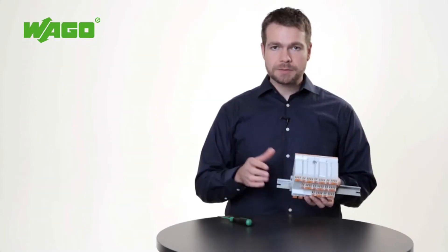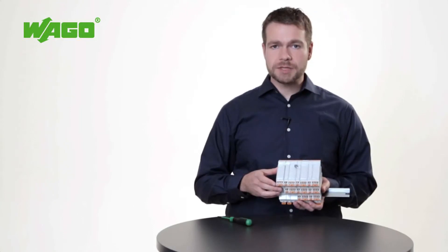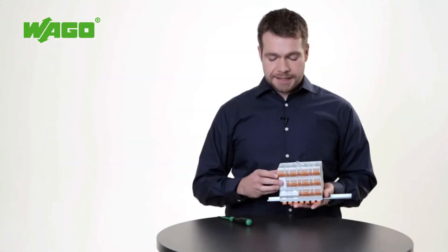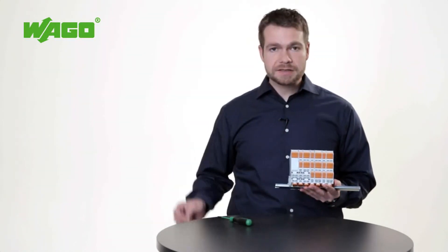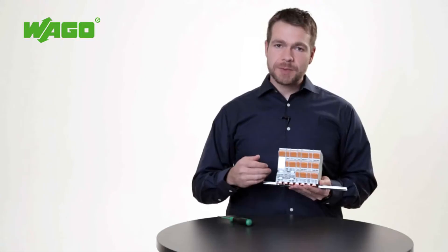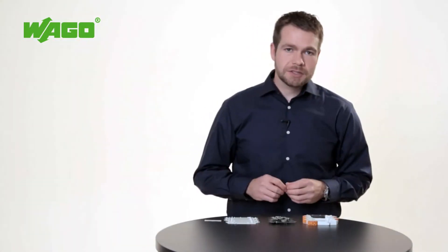If required, the housing cover can be sealed to prevent operating errors. Regardless of which housing width you opt for, the identical lower profile enables you to easily bridge the power supply, saving you the inconvenience of having to wire each individual module.